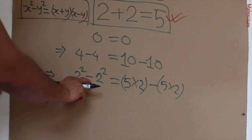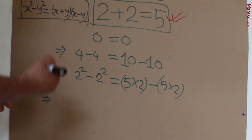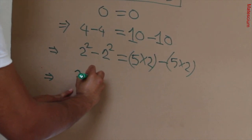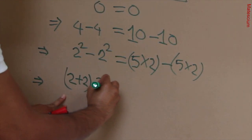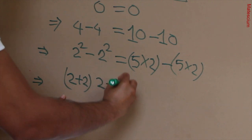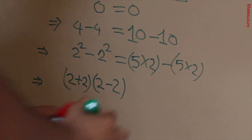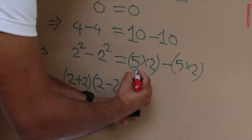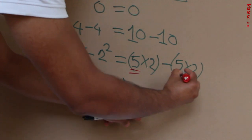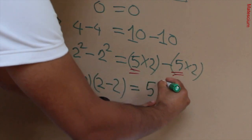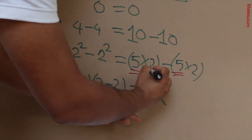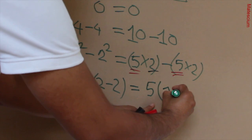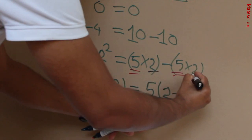So left hand side can be rewritten as 2 plus 2 times 2 minus 2. On the right hand side, this 5 and that 5 can be taken as a common 5. This 2 is here inside the bracket. Minus, and that 2 is here.